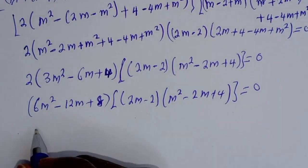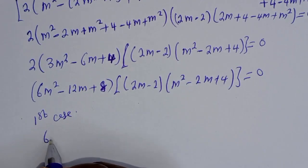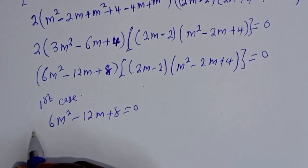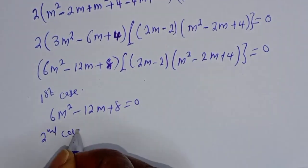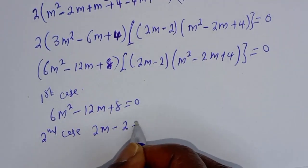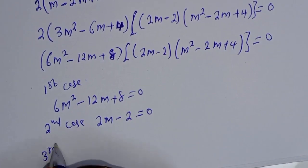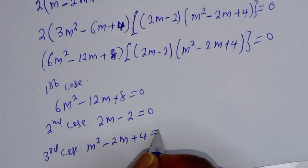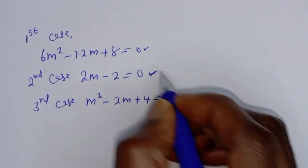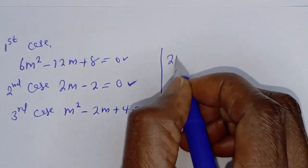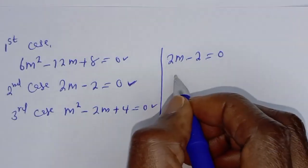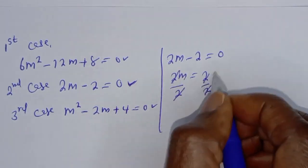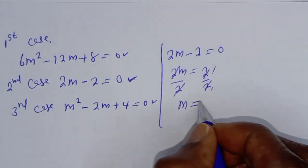From here there are three cases. The first case is 6m squared minus 12m plus 8 equals 0. The second case is 2m minus 2 equals 0. The third case is m squared minus 2m plus 4 equals 0. From the second case, 2m minus 2 equals 0, so 2m equals 2. Dividing both sides by 2, therefore m is equal to 1.